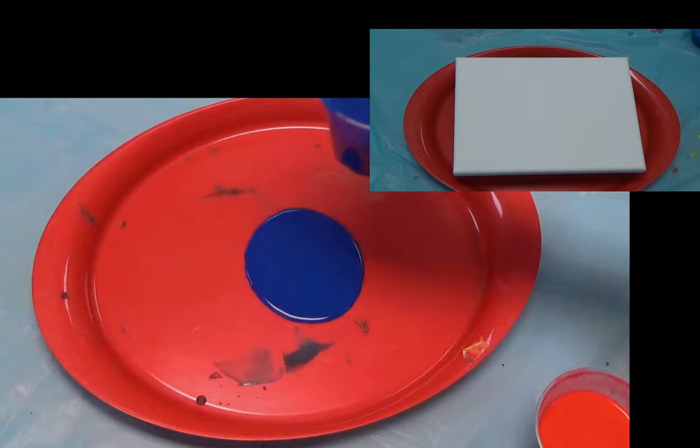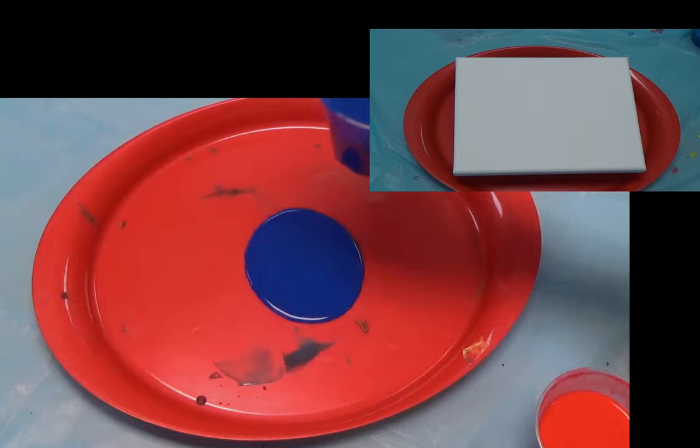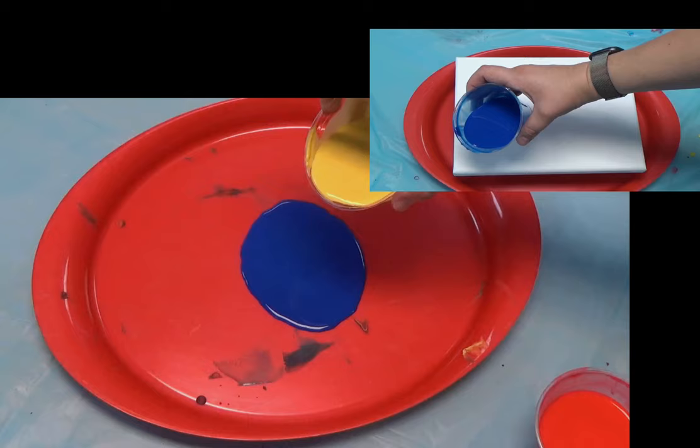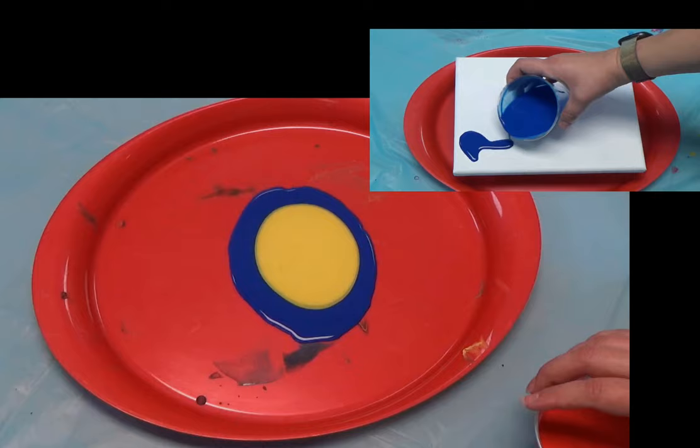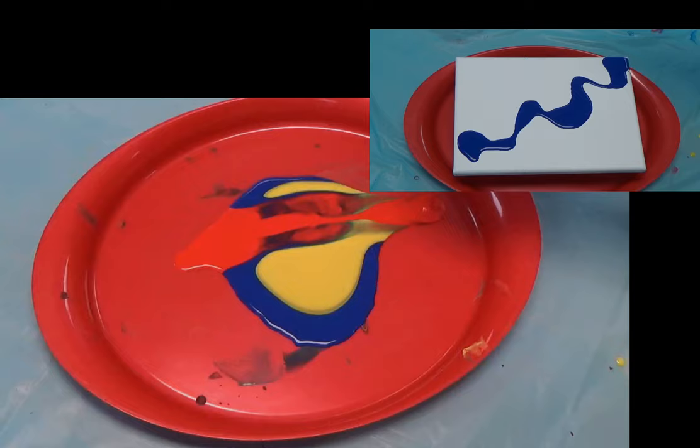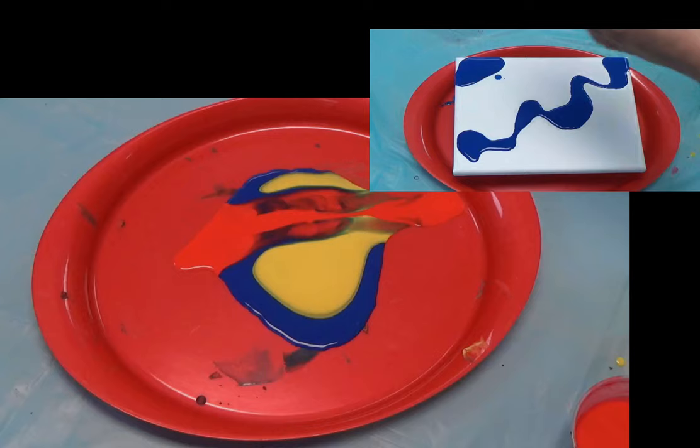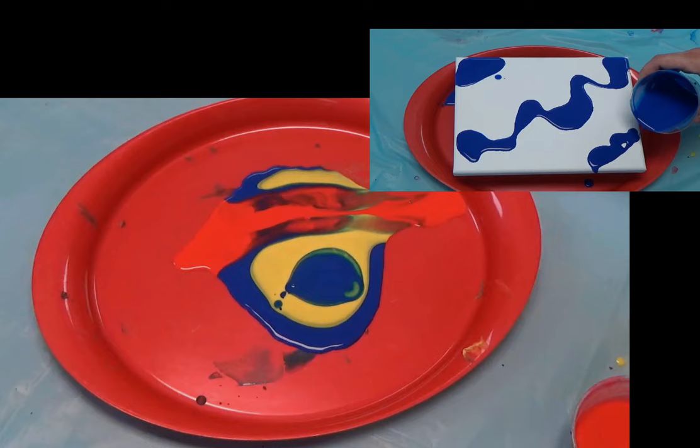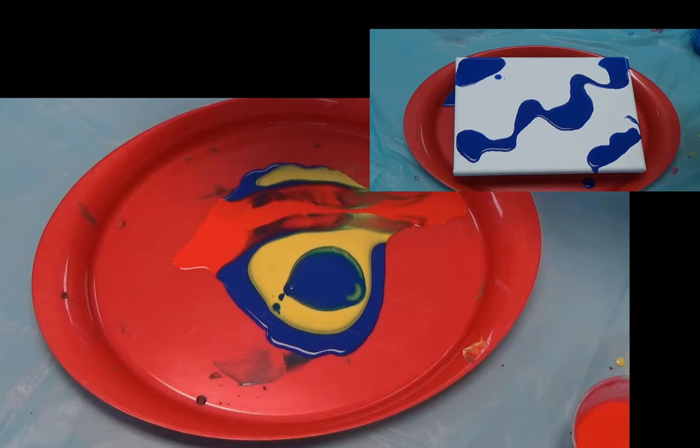Now comes the fun part. Pick one of your colors of paint and gently pour it on your tray. If you are using a blank canvas then pour the paint directly onto the canvas. When you are ready pick another color, it doesn't matter which, and gently pour that color onto your tray. You can pour it on top of the paint that's already there or you can pour it next to it or through it. This is your project and there is no wrong way of painting. You cannot fail this, lovelies, so pour however your heart desires.